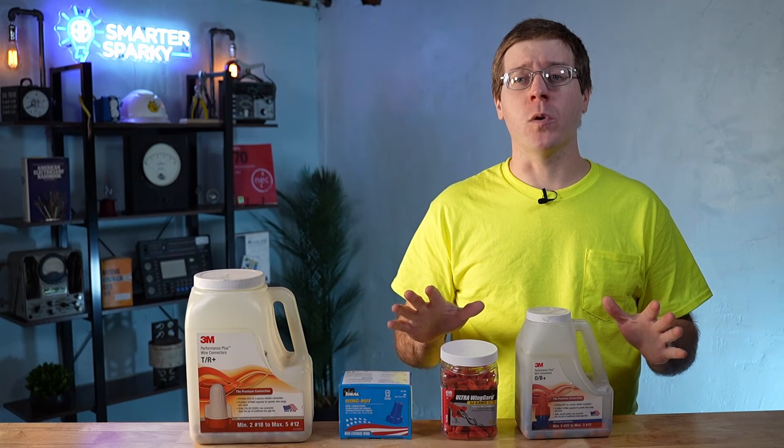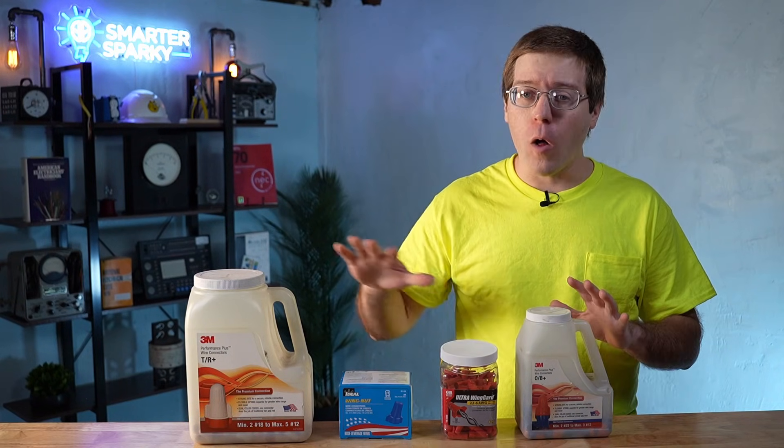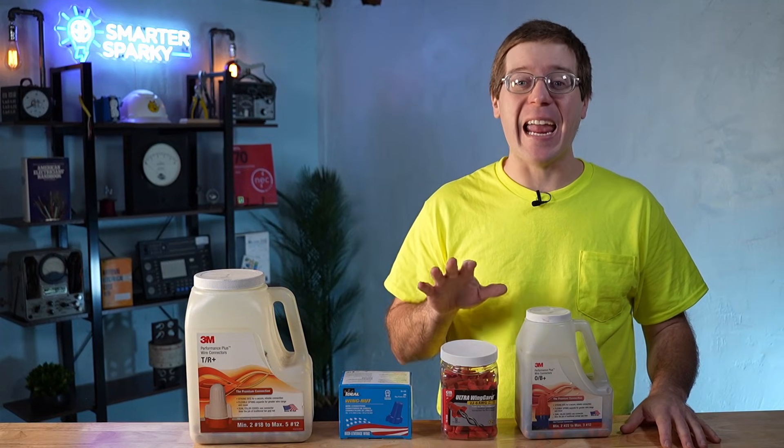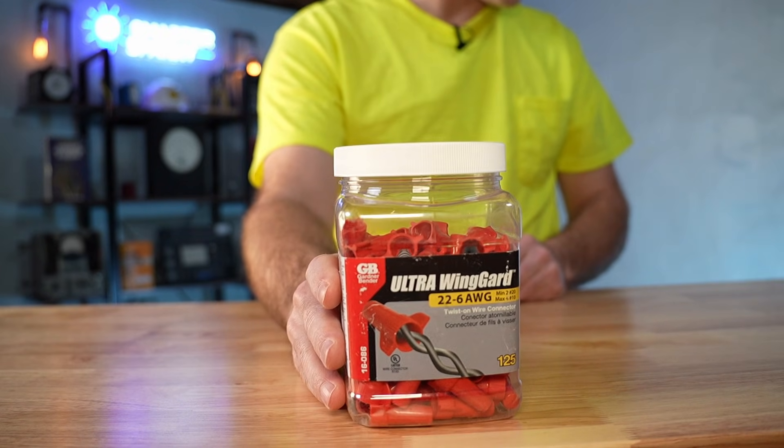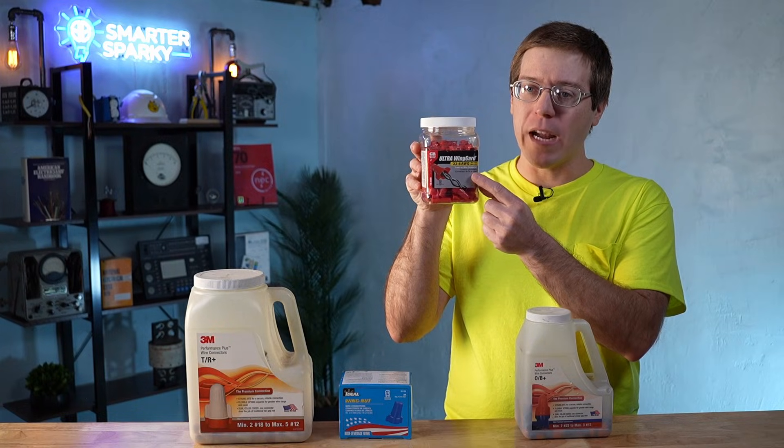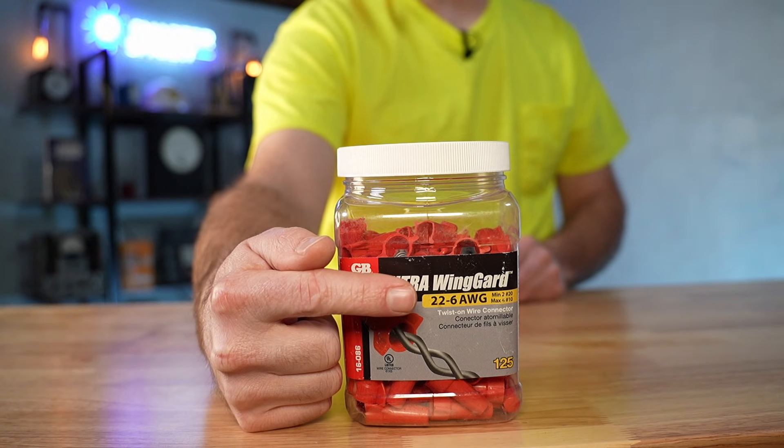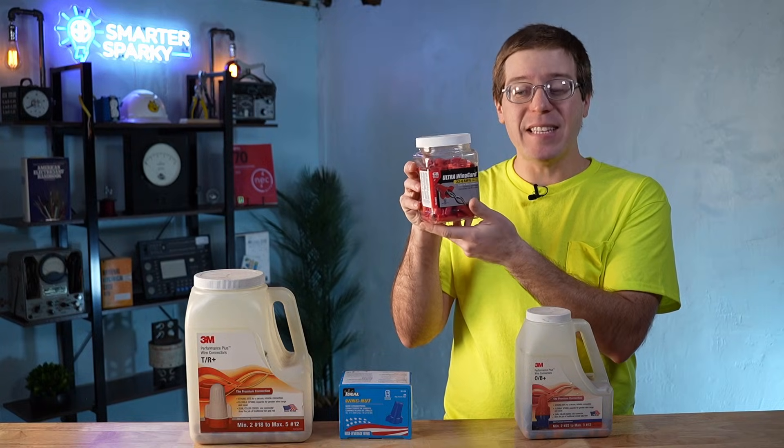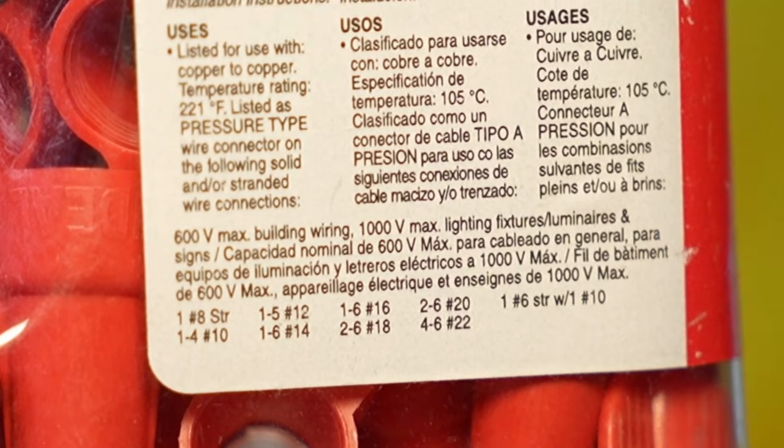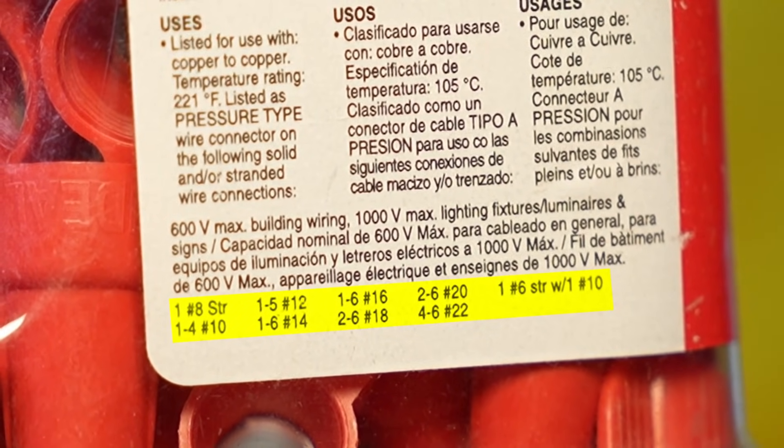The most perfect splice in the world will still fail if you use the wrong wire nut. All wire nuts have a range of wire sizes and conductor quantities that they can work with. Here's a box of wire nuts from the local big box store. Right on the front, we can see these wire nuts are good from 22 gauge, the smallest, to 6 gauge, the largest. Listed on the side of the packaging, however, it shows all of the wire combinations that the wire nuts are approved for.